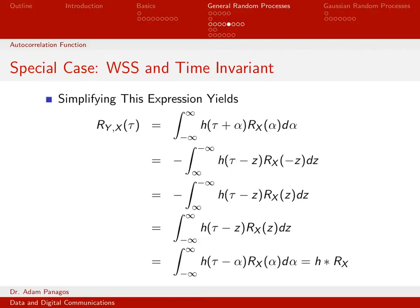Let's simplify that expression. We had the integral from minus infinity to infinity of h(τ + α) r_x(α) dα. I'm going to let z equal negative alpha, doing a change of variables very similar to those in the last two videos. If z equals negative alpha, then wherever I had alpha I now have negative z, and dz equals negative dα, which is why I get a minus sign and a dz.